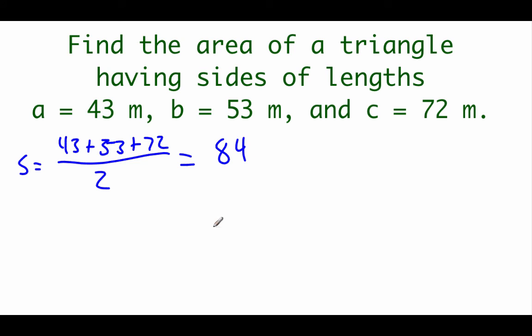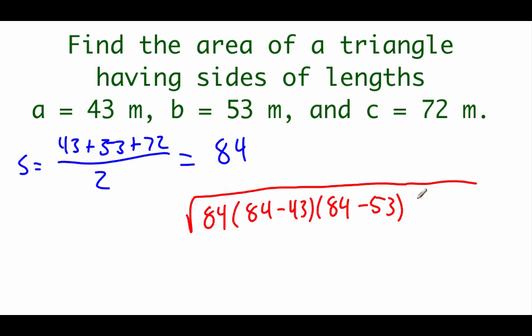Now if we start plugging things into our formula, we're going to do the square root of our semi-perimeter times that semi-perimeter minus the first side, so 43, times that 84 minus the second side, 53, times our semi-perimeter, 84, minus the last side, 72.